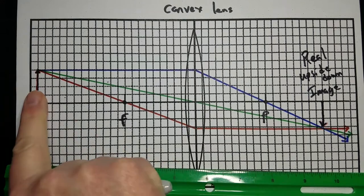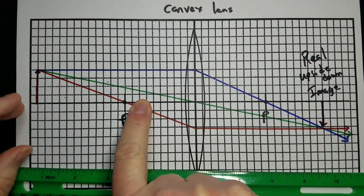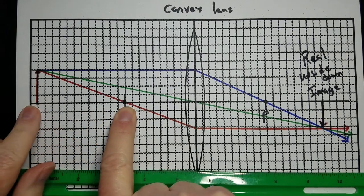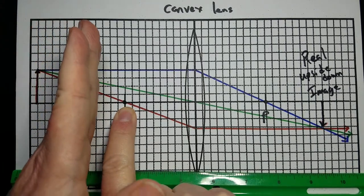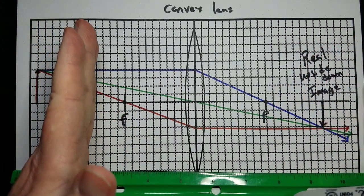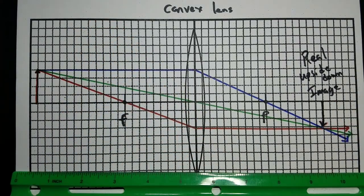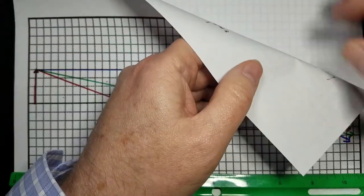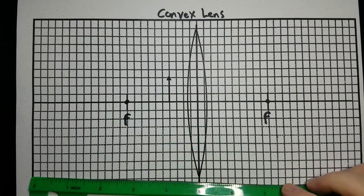Now, what happens when we move that object inside the focal length? There is another point called the 2F point. As you bring the object in, the image moves out until you cross the focal point, and then we're going to get a virtual image. Now we've moved the object inside the focal length, and we're going to draw the same three rays, but there is going to be a little catch to them.